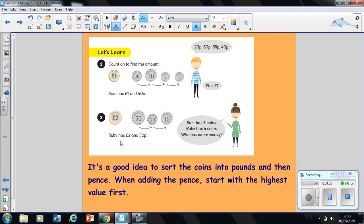Now it says here Sam has five coins and Ruby has four coins. Who has more money? Can you pause the video and have a discussion with your learning partner and come back together? You are right. Ruby has more money because she has got a pound more than Sam and she's also got 40 pence more than Sam as well.